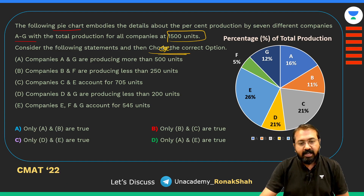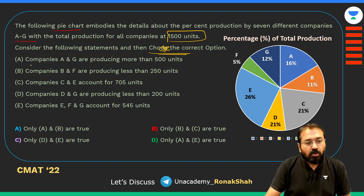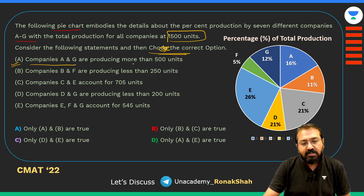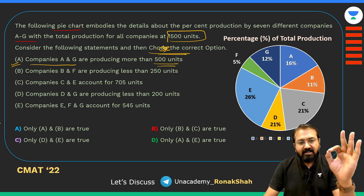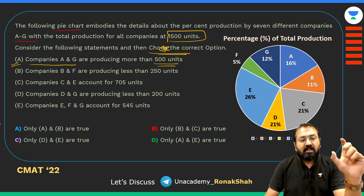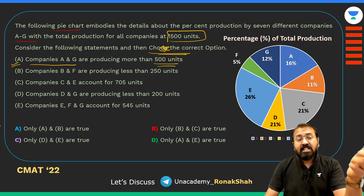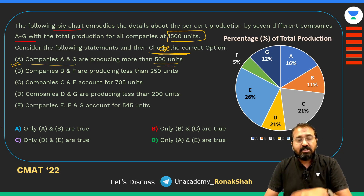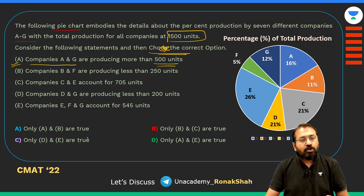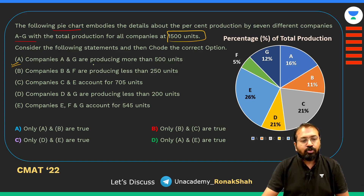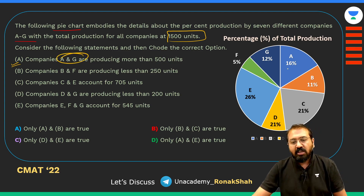The first statement says that company A and G are producing more than 500 units. This question is ambiguous because they haven't mentioned whether company A and G together are producing 500 units, or individually. Still, if you look at the options, you'll figure out it has to be together.